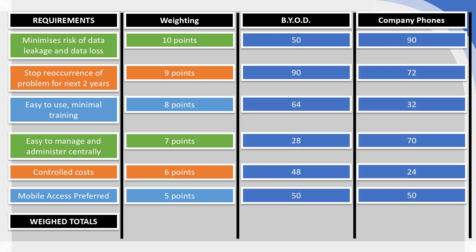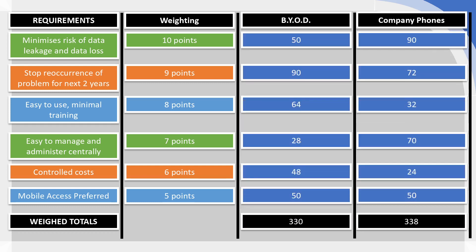Once you have your weighted scores, you simply add them up. The 'Bring Your Own Device' option totals 330, and the company phones option totals 338. This allows us to see that, if we've put in the correct information, made the right judgments, and weighted each requirement properly, the preferred option as demonstrated through the weighted scorecard is the company phone. That would then be the recommended option, and the rest of the business case would proceed with a justification and argument for running a project to issue all employees with company phones.